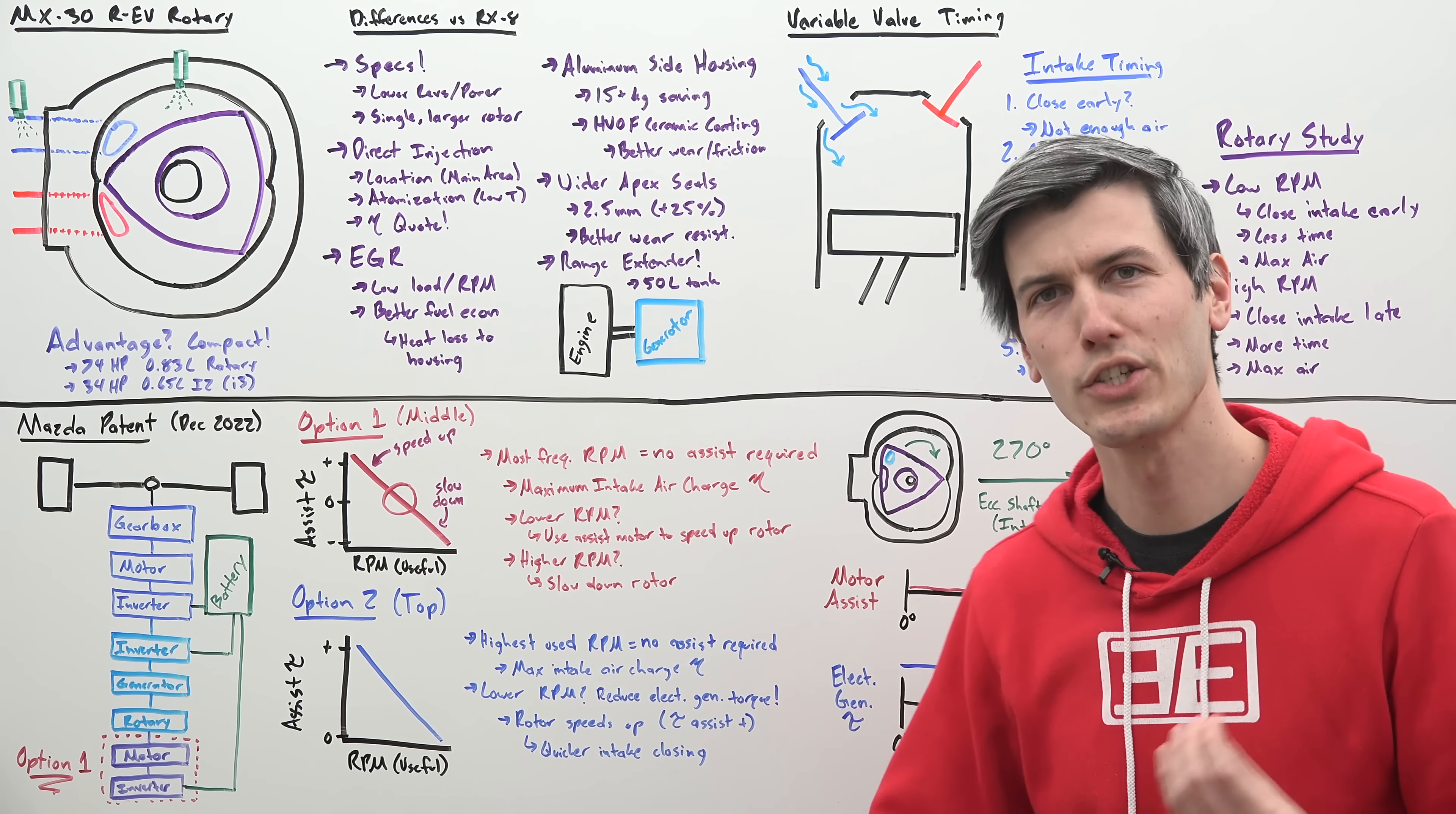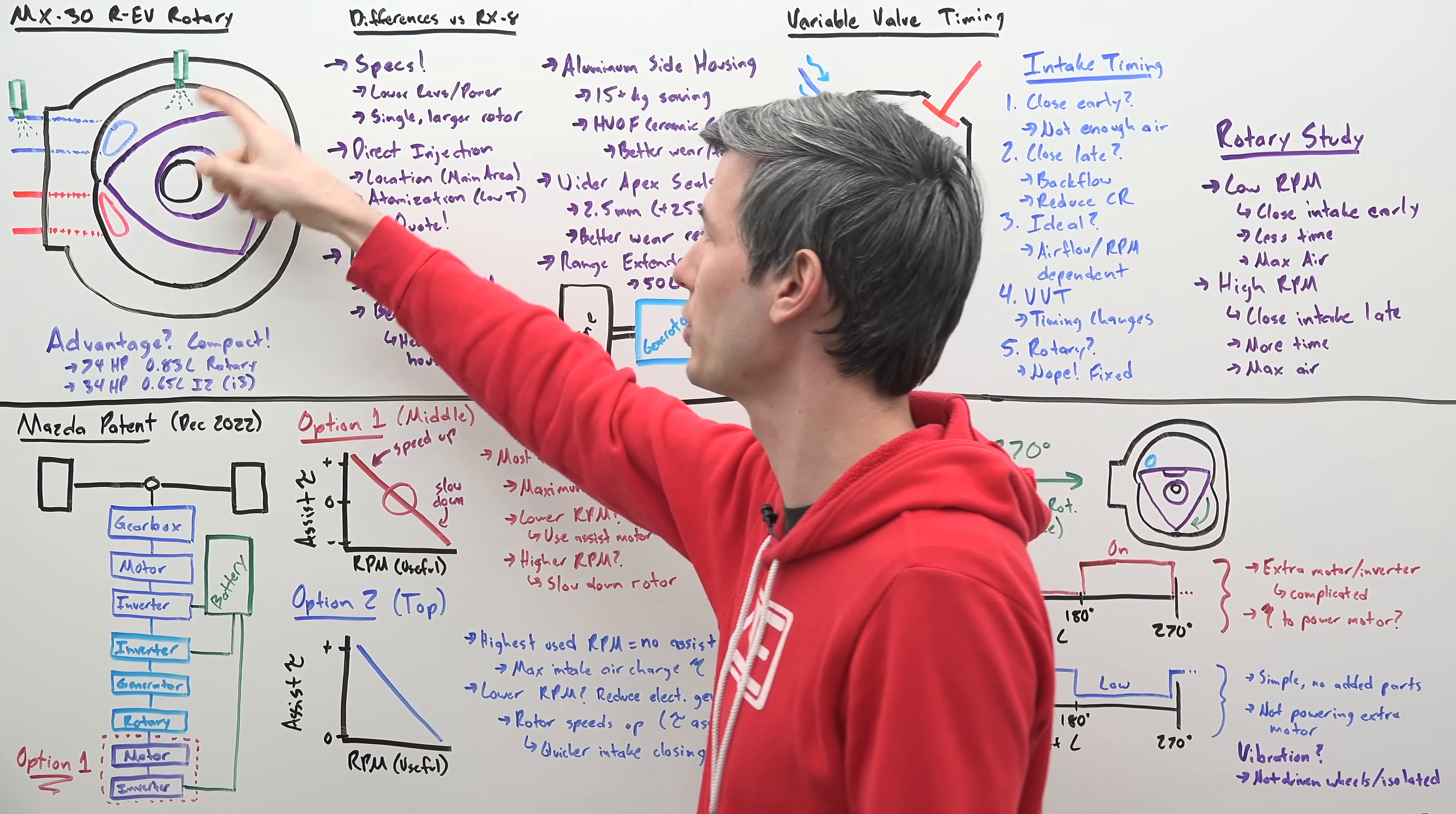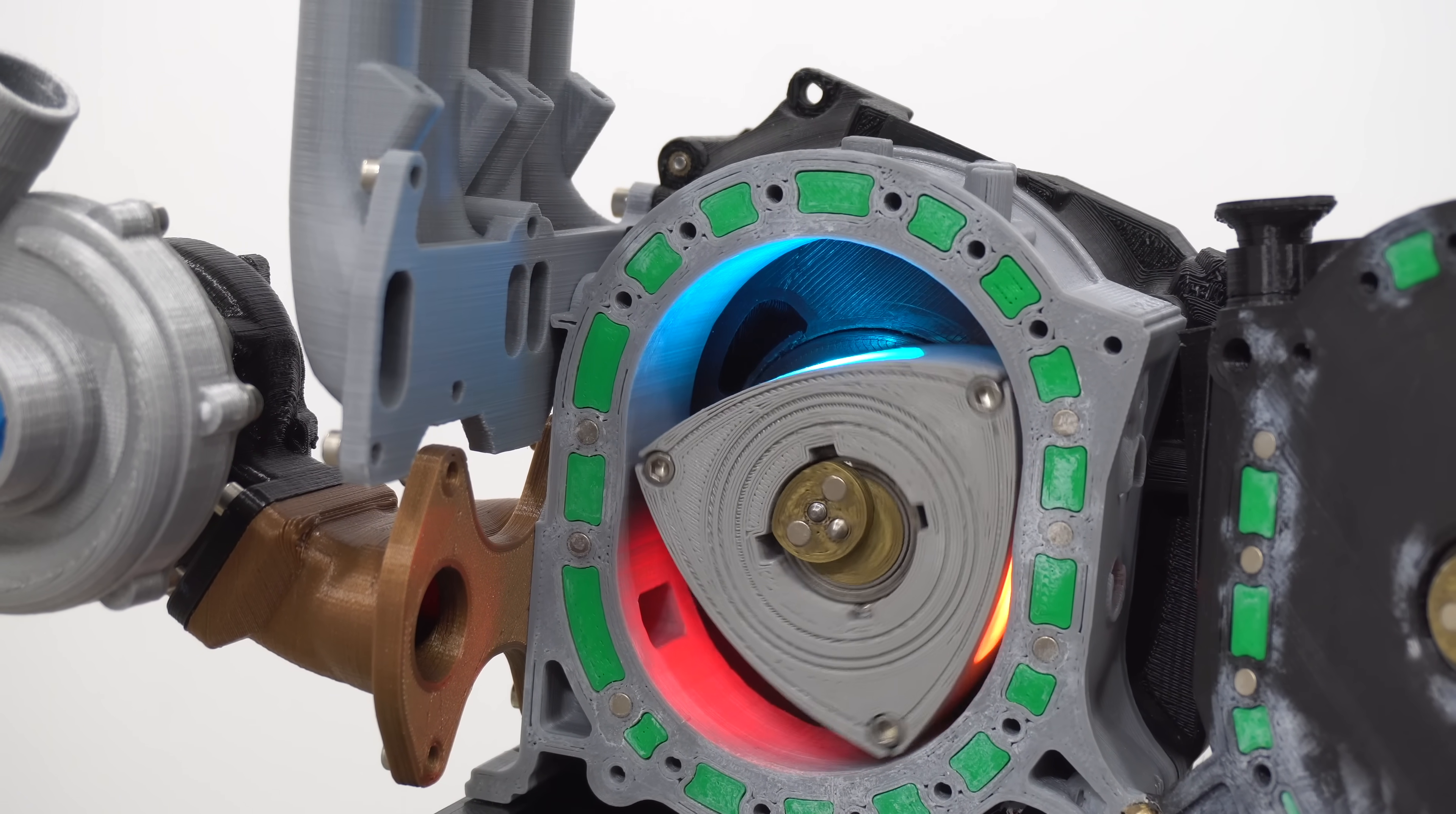Now one of the most notable changes of this engine is that you are now directly injecting fuel into the combustion chamber rather than in the intake port like was done previously. So Mazda says there's two real benefits to this. First of all the location of where you're injecting that fuel keeps the fuel in the main area of that combustion chamber and also you have better atomization because you're using higher pressure and a finer mist of fuel being injected which is helpful at low temperatures such as startup.